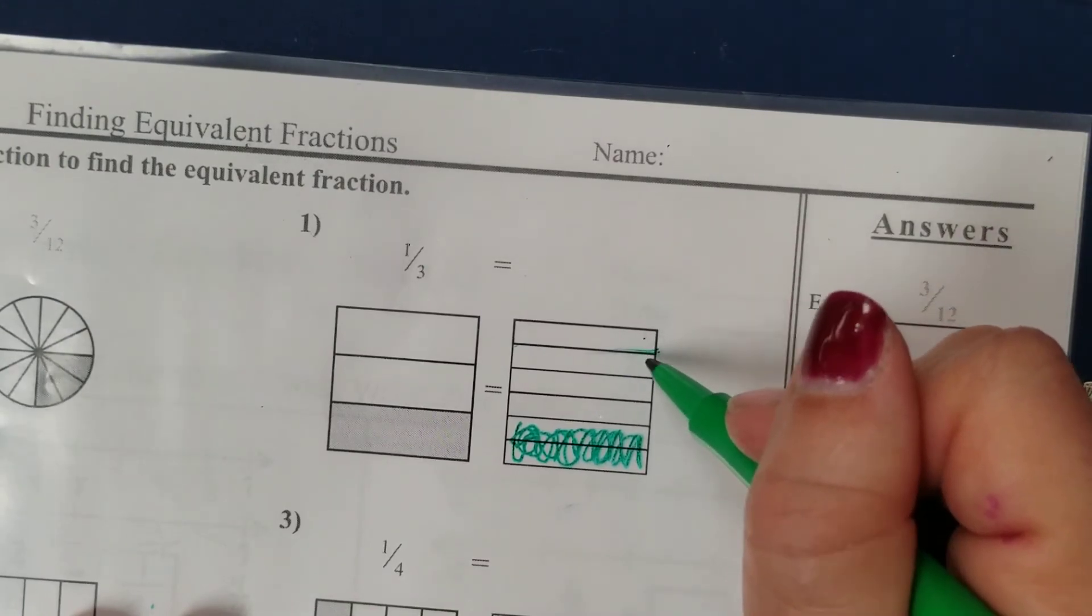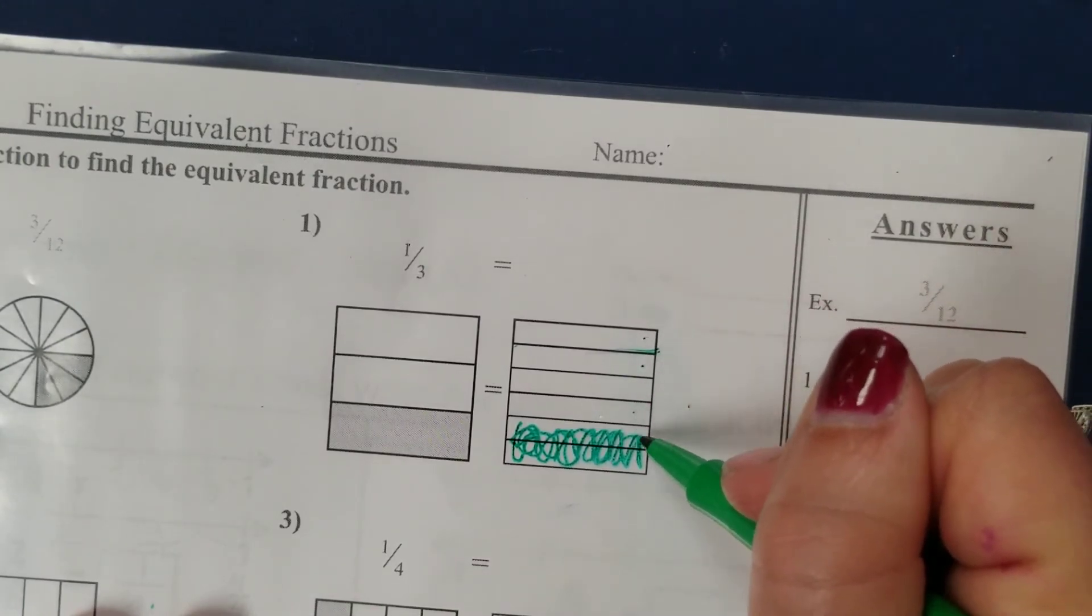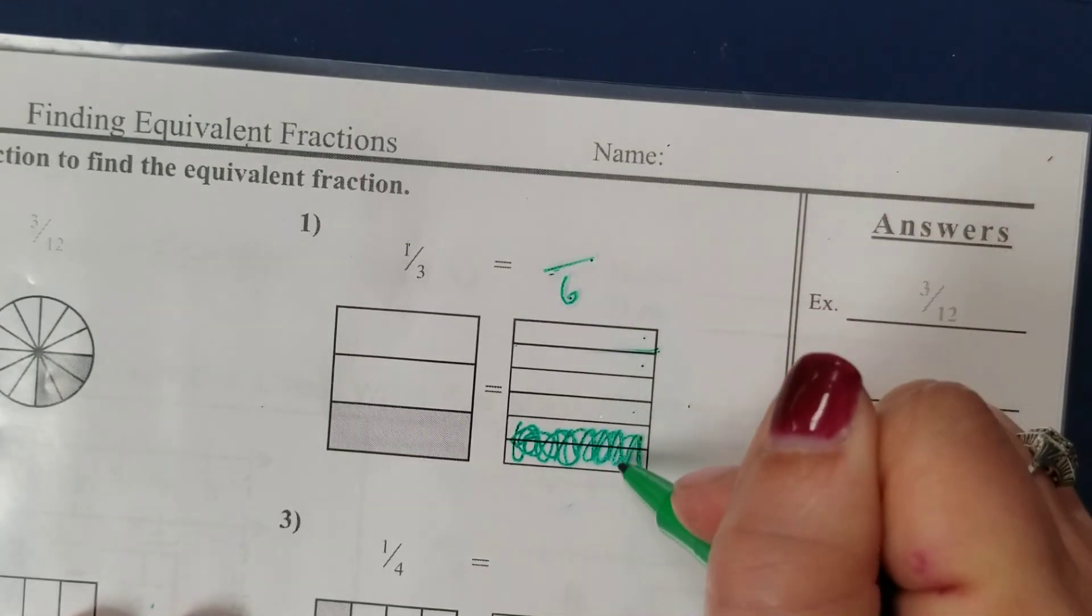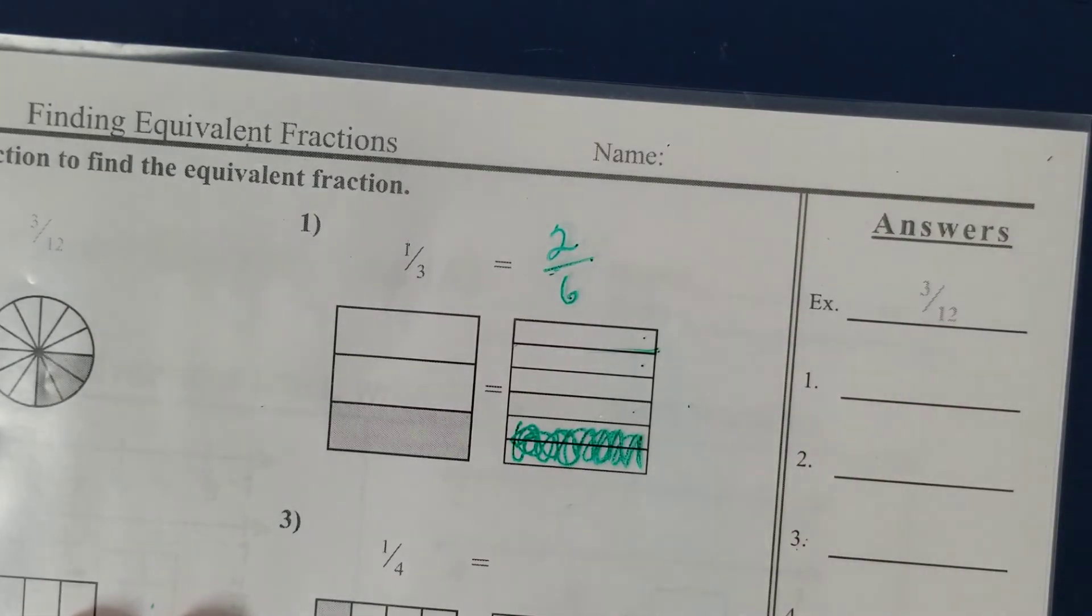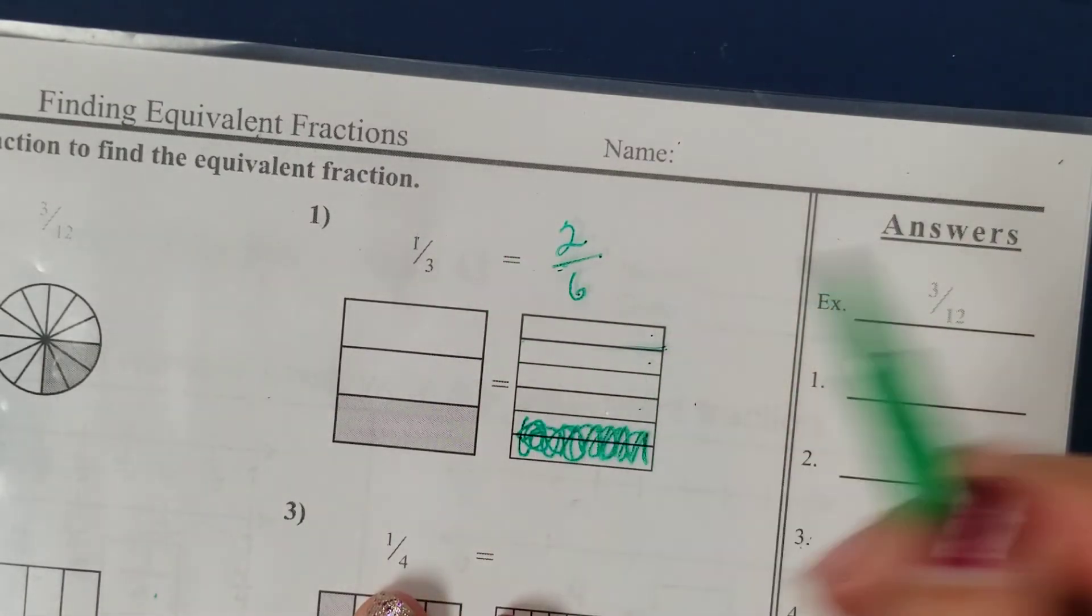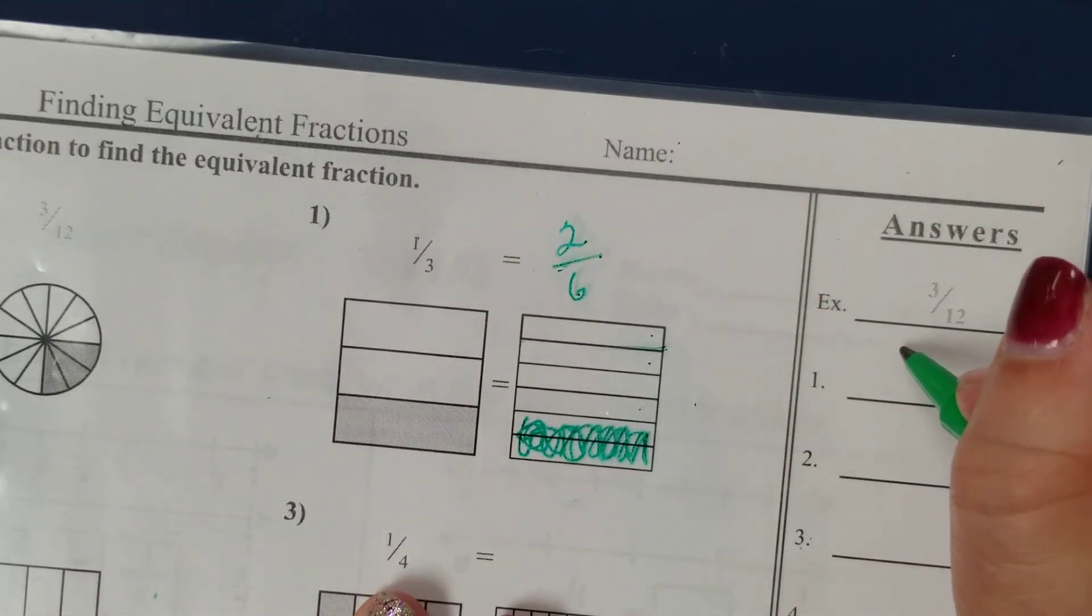So I'm going to count: one, two, three, four, five, six. That's my denominator. Two are shaded. That's my numerator. So two out of those six parts has been shaded. So one-third is equivalent to two sixths.